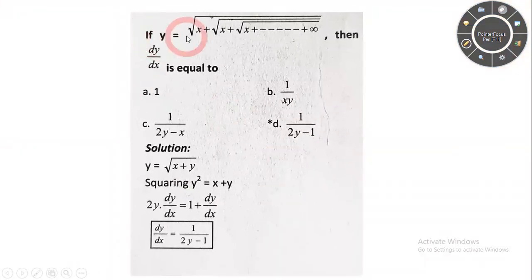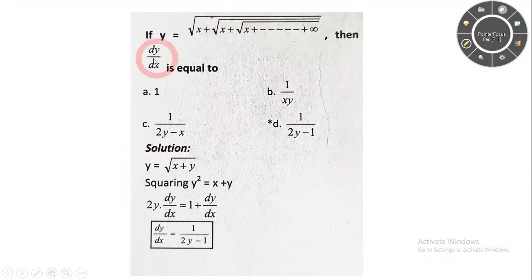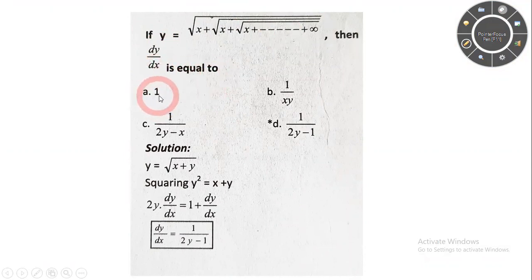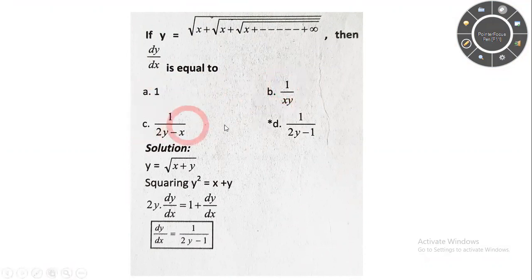Now let's look at a question. If y equals square root of x plus square root of x plus square root of x plus dot dot dot up to infinity, find dy/dx. The options are: option A: 1, option B: 1 upon 2y, option C: 1 upon (2y minus x), option D: 1 upon (2y minus 1).